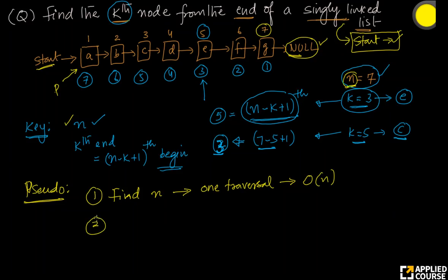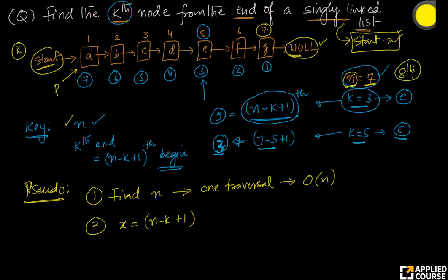Step two: once I have n, the input will be the start node and the value of k. I compute a variable x equals n minus k plus 1. This check is important: if x is 0 or less, that means someone asked for a k larger than n, which is meaningless. This is a sanity check — if k is larger than n, you should raise an alarm saying there is an error in the input value of k.